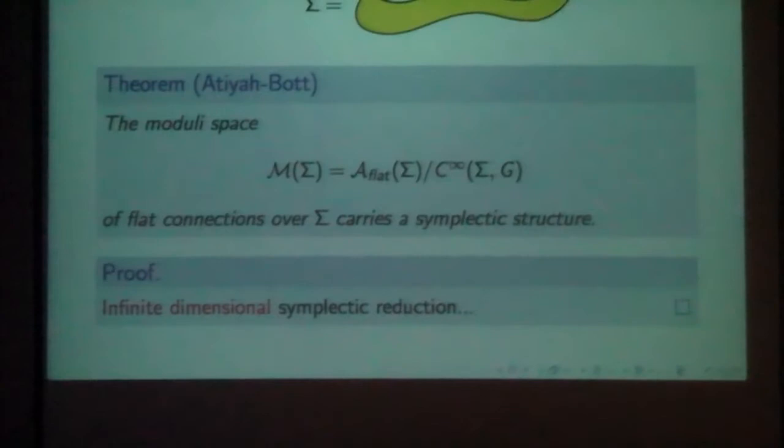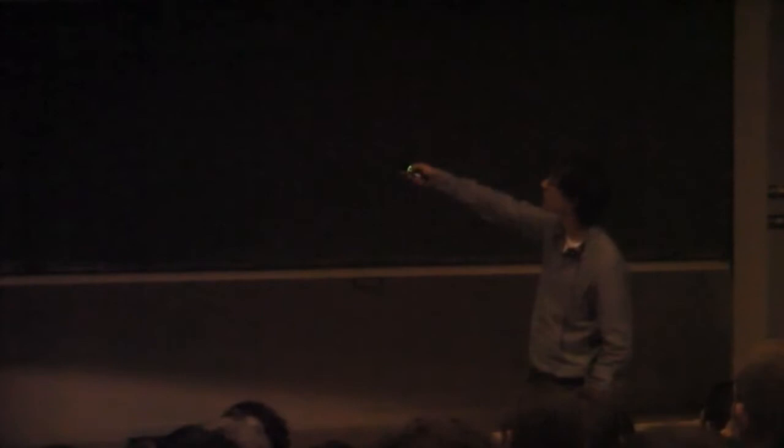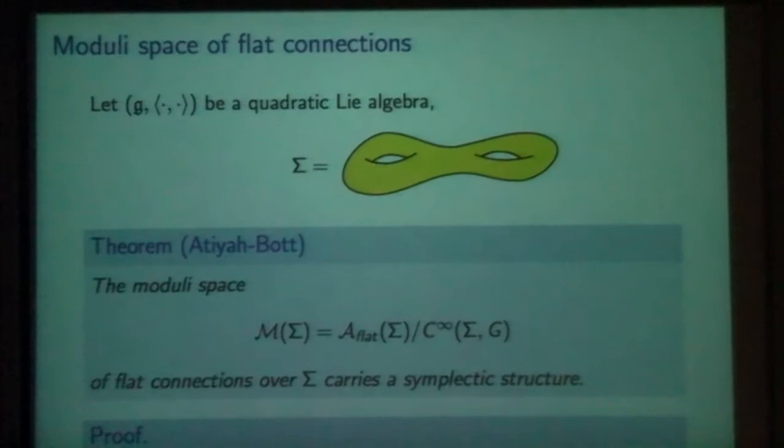We can look at maps from our surface into our structure group and act on different fibers by different elements of the structure group. That's this group of maps from the surface into the structure group. If I take the quotient of the space of flat connections by this group — usually called the gauge transformations — I get a symplectic structure. This was shown in the literature, but it uses infinite-dimensional reduction. So we're going to look at this same construction, but try to do it using finite-dimensional techniques instead.